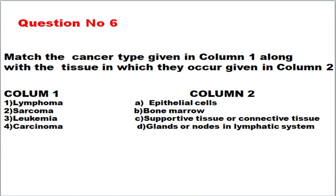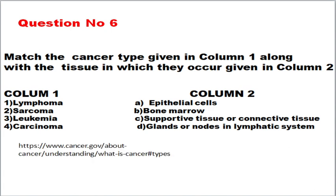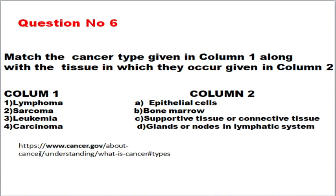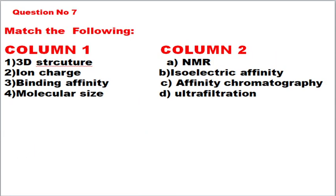The next question asks you to match the cancer type in column one with the tissue type in column two. Cancer is an important topic — at least five to ten marks will be asked about it. Refer to cancer.gov, which is under the National Institute of Health. The answers: lymphoma originates from glands and nodes of the lymphatic system; sarcoma from supporting tissue or connective tissue; leukemia from bone marrow or blood cells; carcinoma from epithelial tissue.